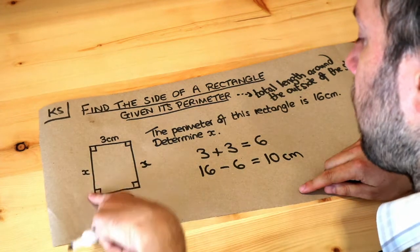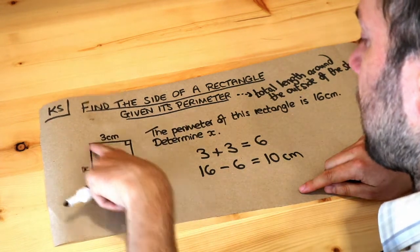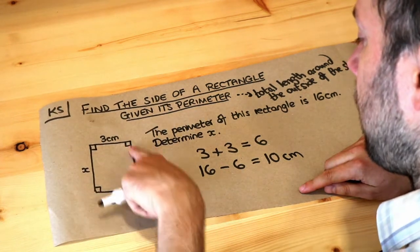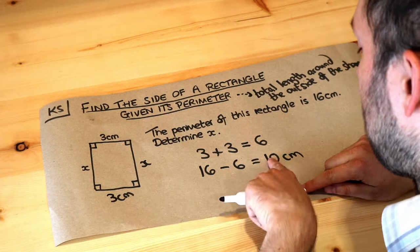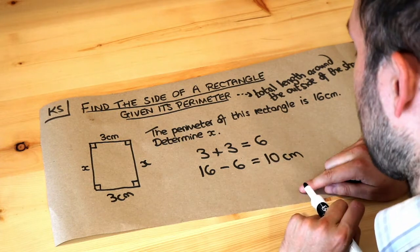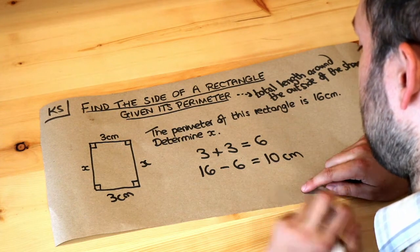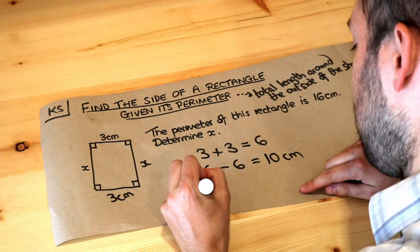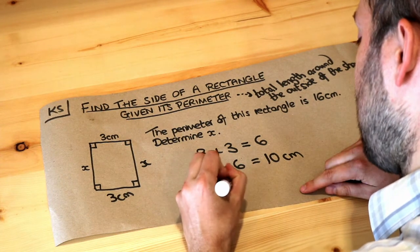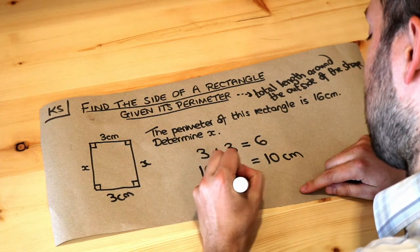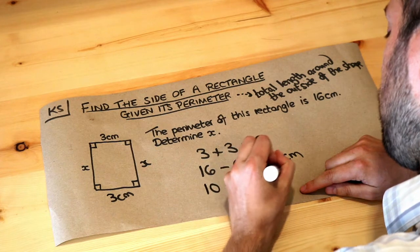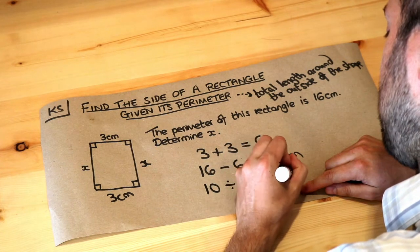Now because we know that both these lengths are the same, we can split that 10 evenly into 2. So we just do 10 divided by 2, which is 5 centimetres.